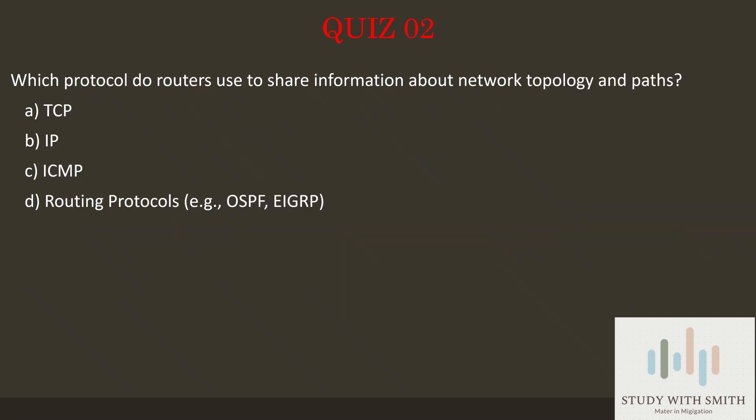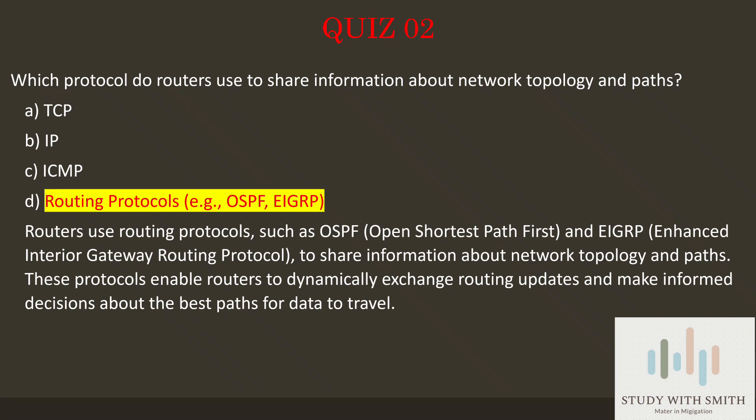Question 2: Which protocol do routers use to share information about network topology and paths? The answer is D: Routing protocols, for example OSPF and EIGRP. Routers use routing protocols such as OSPF (Open Shortest Path First) and EIGRP (Enhanced Interior Gateway Routing Protocol) to share information about network topology and paths. These protocols enable routers to dynamically exchange routing updates and make informed decisions about the best paths for data to travel.